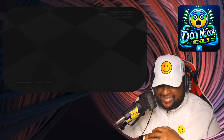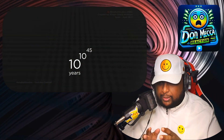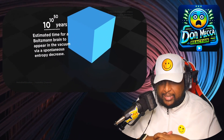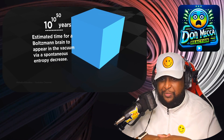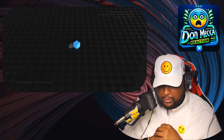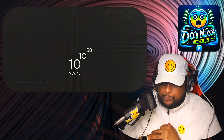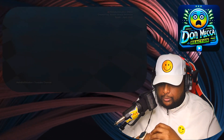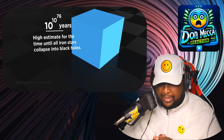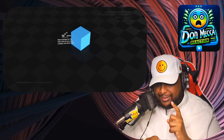Who did all this math?! 10 to the power of 10 to the 50. Estimated time for a Boltzmann brain to appear in a vacuum where spontaneous entropy decreases. Wow. Highest estimate until all iron stars collapse into black holes — there are still new black holes being formed, even all those years later. Highest estimate for the time it takes for the universe to reach its final energy state: 10 to the power of 10 to the 120 years.